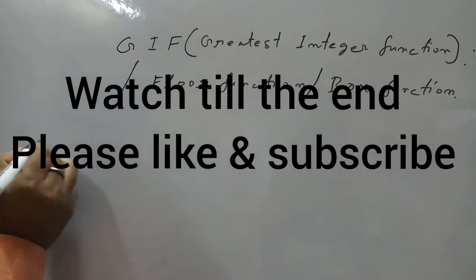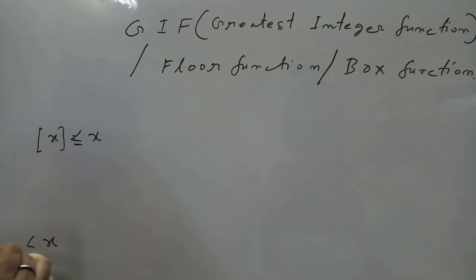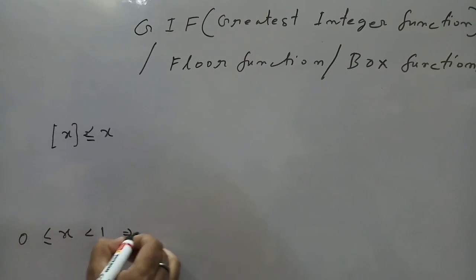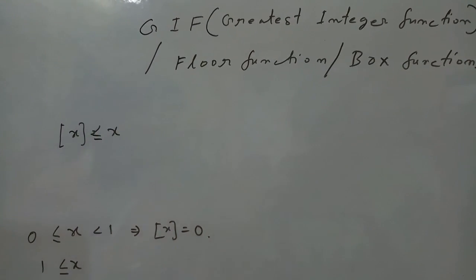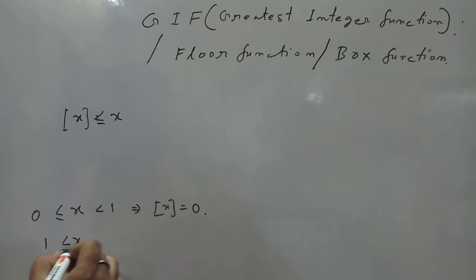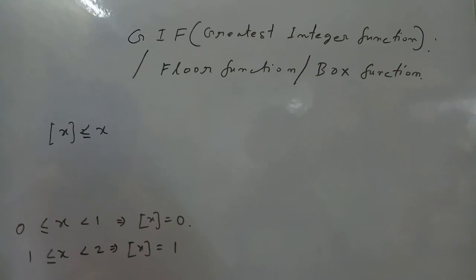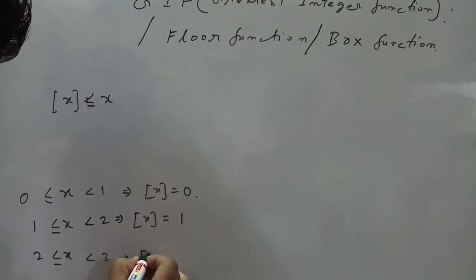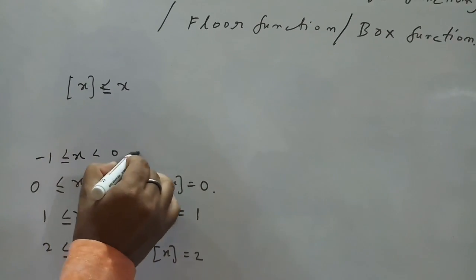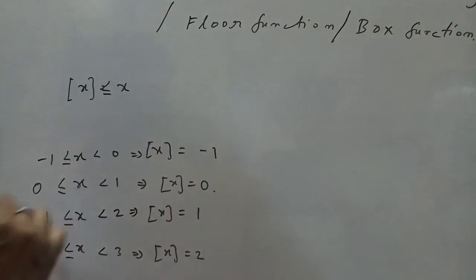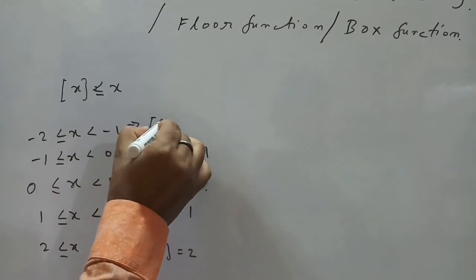The value of Box[X] is less than or equal to X. When X lies between 0 and 1, Box[X] = 0. When X lies between 1 and 2, Box[X] = 1. When X lies between 2 and 3, Box[X] = 2. On the negative side, when X lies between -1 and 0, Box[X] = -1. When X lies between -2 and -1, Box[X] = -2.